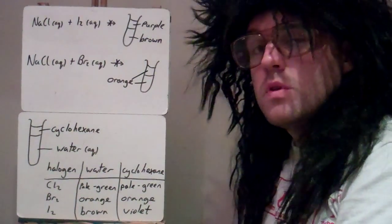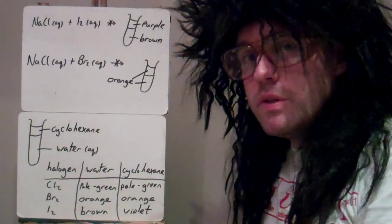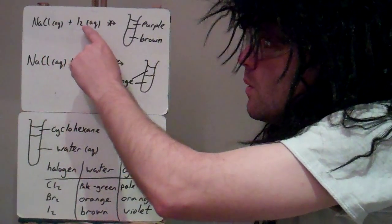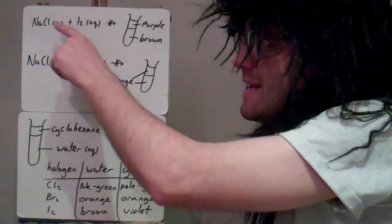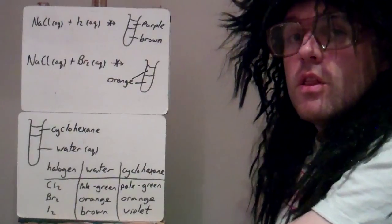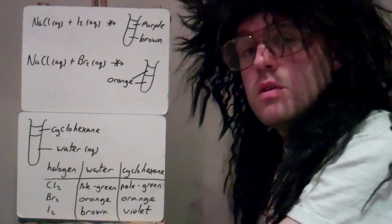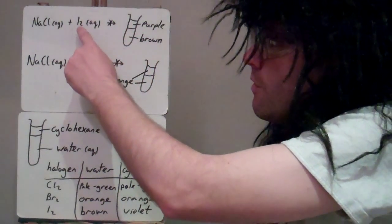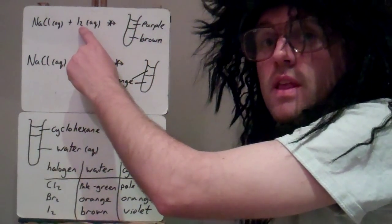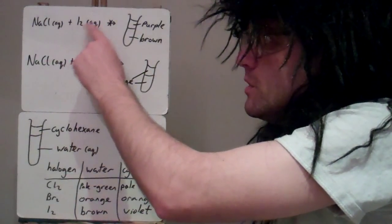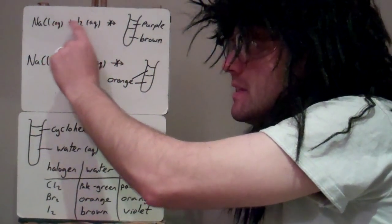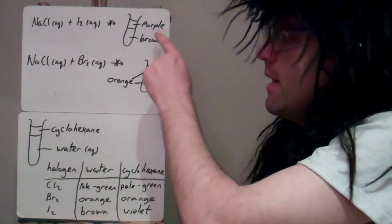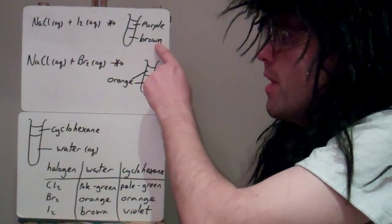Here are two examples where there is no reaction, but you still see a colour — the colour just doesn't change. With sodium chloride and iodine: iodine is less reactive than the chloride, so it's not going to oxidise or displace it. The colours you see are of the iodine — it stays as iodine and doesn't change to chlorine, because iodine is less reactive than the chloride. So we have a purple organic cyclohexane layer and a brown aqueous layer.